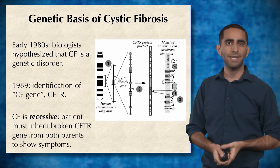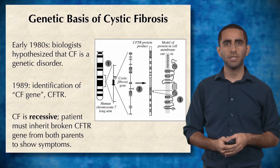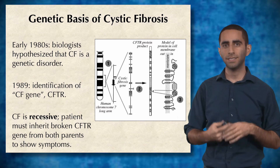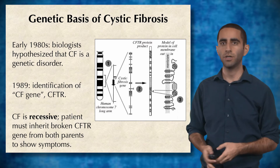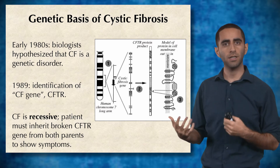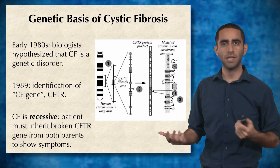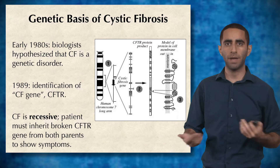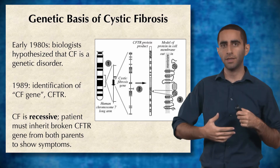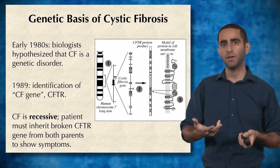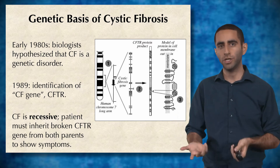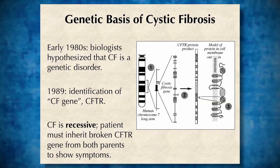In the early 1980s, biologists had hypothesized that CF is actually a genetic disorder. So unlike a lot of diseases that you can get from bacterial or viral infections, they thought that CF was actually genetic. In 1989, they actually identified the CF gene, which is called CFTR.